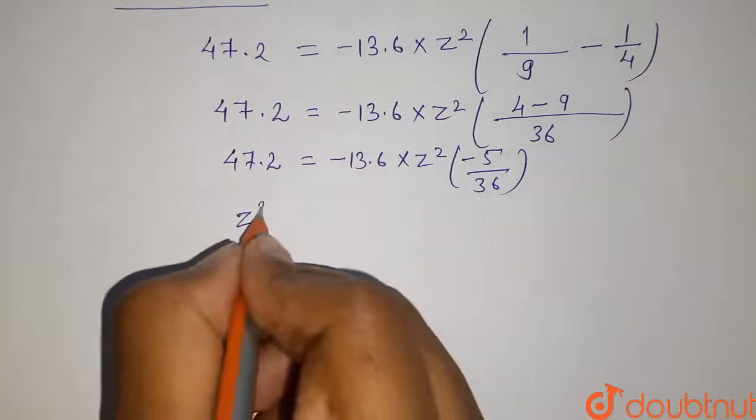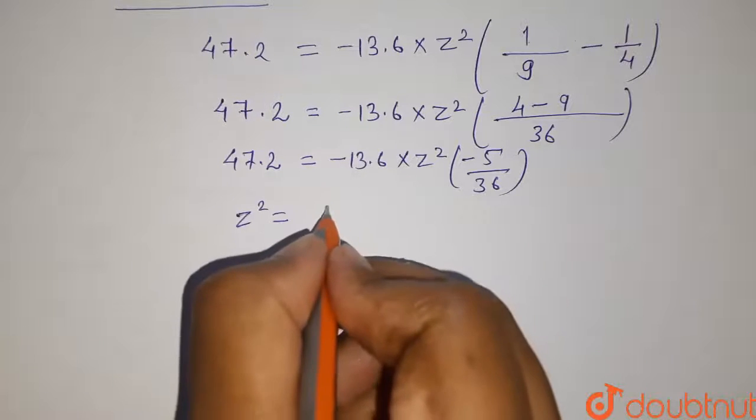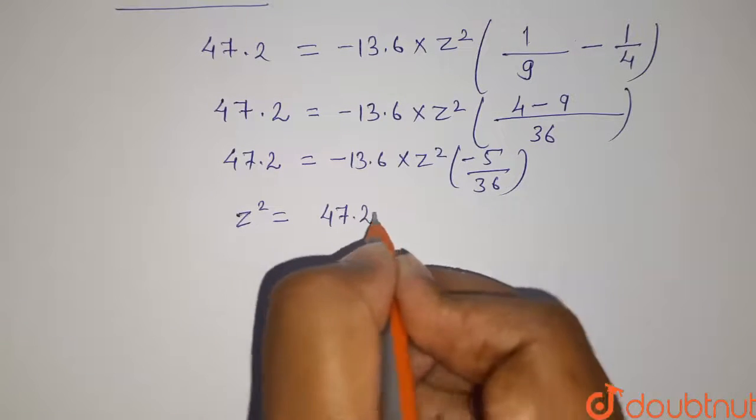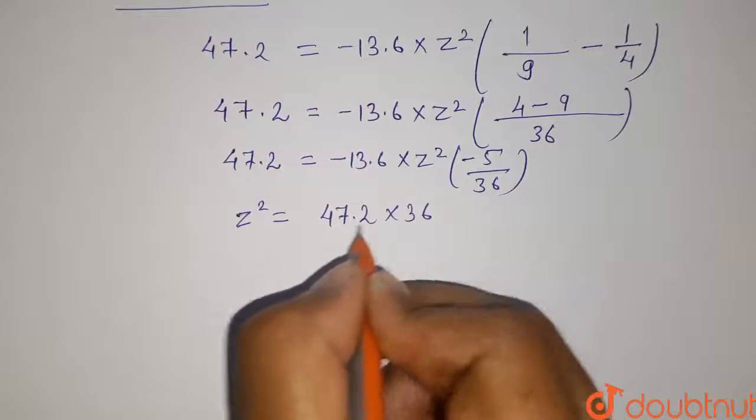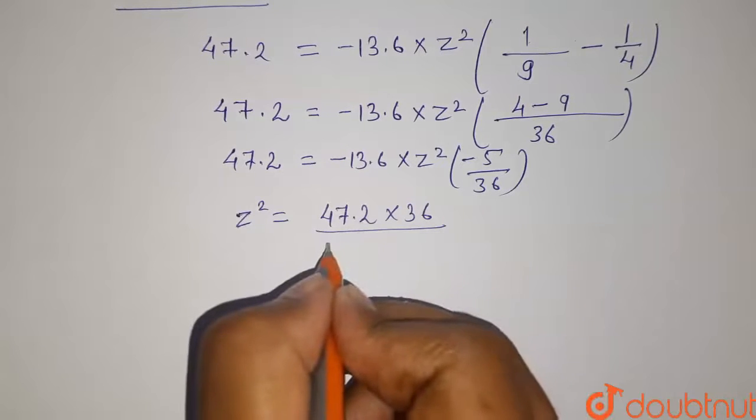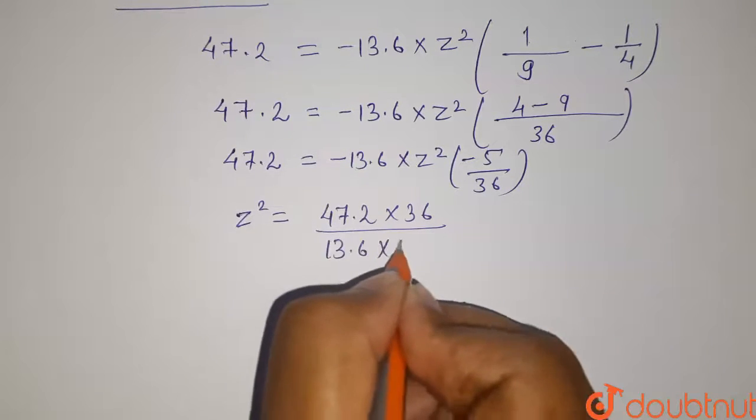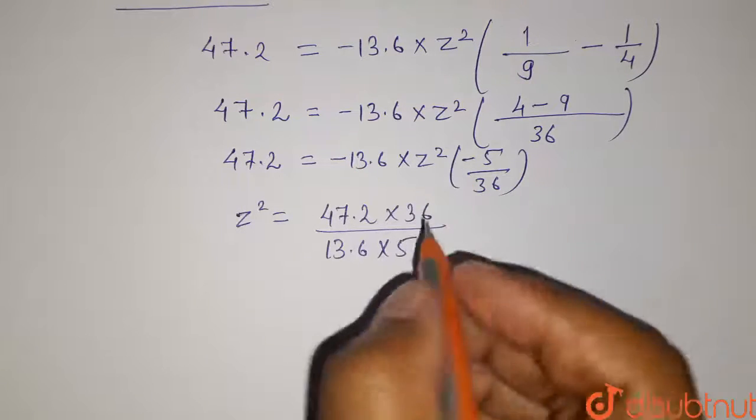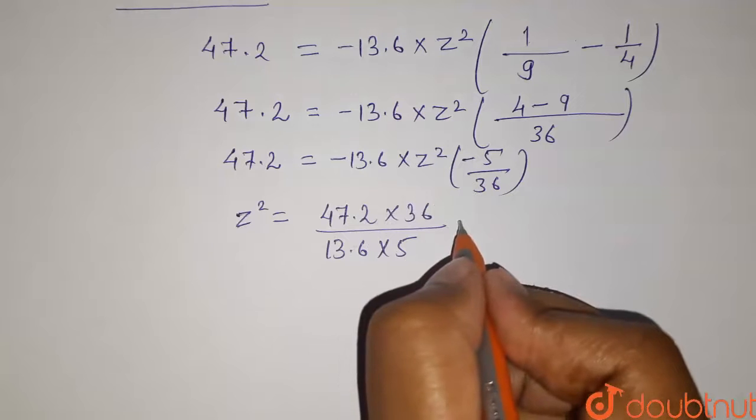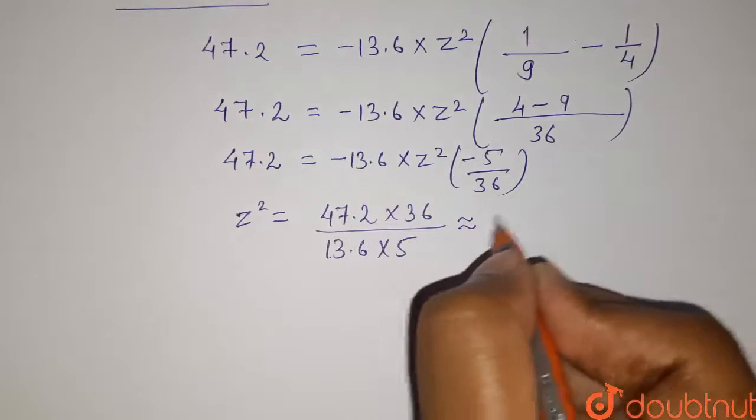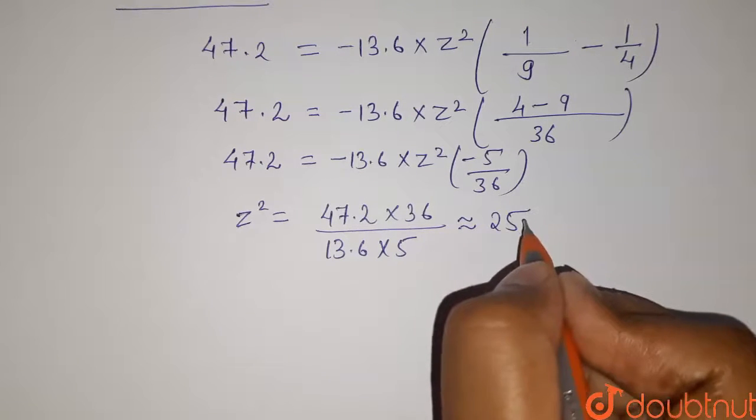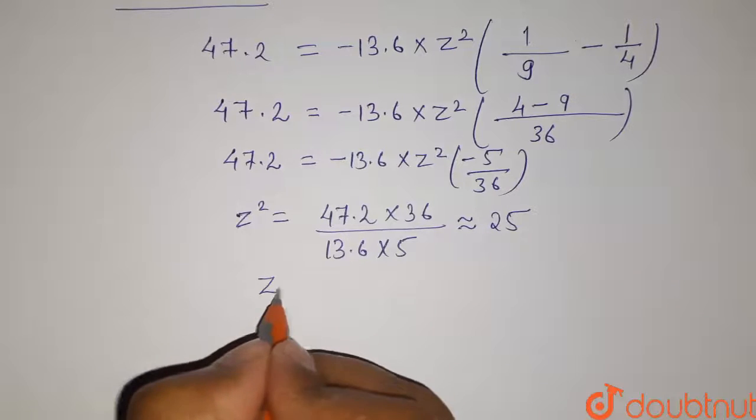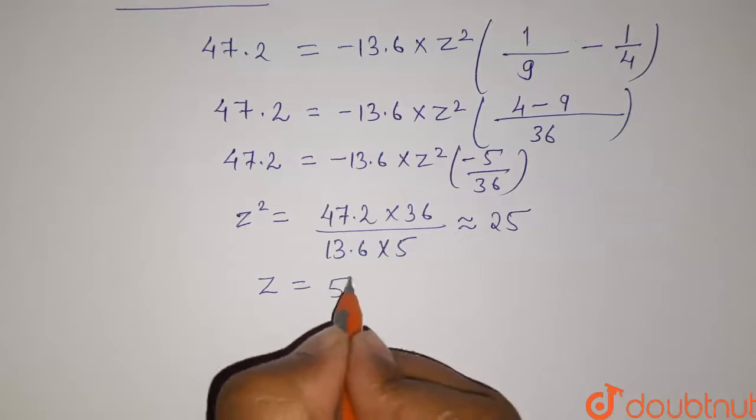So the value of Z square will be equals to 47.2 into 36 divided by 13.6 into 5. This minus and this minus will become plus. And on calculating this is nearly equals to 25. So from this the value of Z will be equals to 5.